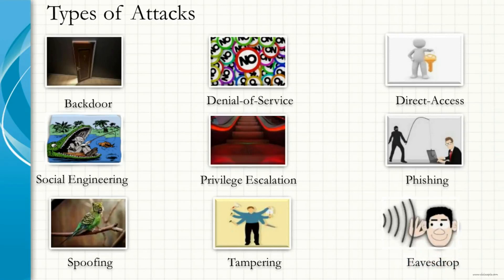Eavesdropping. The term eavesdropping is used to refer to the interception of communication between two parties by a malicious third party. Eavesdropping can be done against telephone lines, cellular networks, emails, and other methods of private instant messaging. It can be done over unsafe network communications. Insecure mediums such as Wi-Fi communication and insecure protocols like HTTP, FTP, Telnet, etc. are susceptible to eavesdropping.